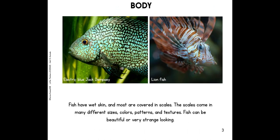Body. Fish have wet skin and most are covered in scales. The scales come in many different sizes, colors, patterns, and textures. Fish can be beautiful or very strange looking. Let's look at our two fish here — we have an electric blue Jack Dempsey and a lionfish. We can see they have two different colors, different patterns, and they look very different from one another.